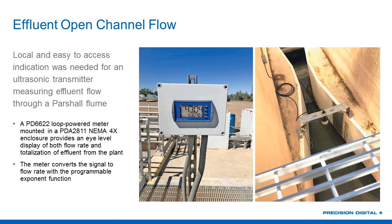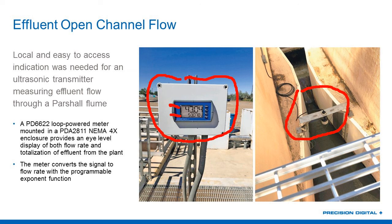The last application I'll talk about is, once again, open channel flow — this is effluent open channel flow, so a little bit cleaner water. We have some type of ultrasonic transmitter installed here over a Parshall flume. They just wanted a local display that was loop-powered. Once again, I think this is GPM on the top and the totalized gallons on the bottom — a very typical application for water and wastewater. Most ultrasonic transmitters have the open channel flow weir and flume equations built in, but if need be, we can program that into the Precision Digital device and do the conversion from distance or head to open channel flow. This is installed in our PDA-2811, a very low-cost plastic enclosure with NEMA 4X rating.